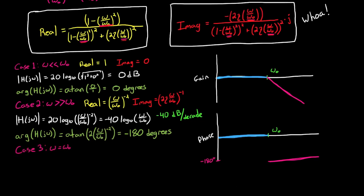For the third case, omega equals the break frequency omega-0. Now the ratio omega over omega-0 equals 1. The real component is 0, and for the imaginary component, you're left with minus 2 zeta divided by 2 zeta squared, or just minus 1 over 2 zeta. Now for the gain plot, this is worth noting. The magnitude at the break frequency is equal to 1 divided by 2 zeta written in decibels. In other words, as your damping ratio decreases, your magnitude at this break frequency increases all the way up to infinity when zeta goes to 0.